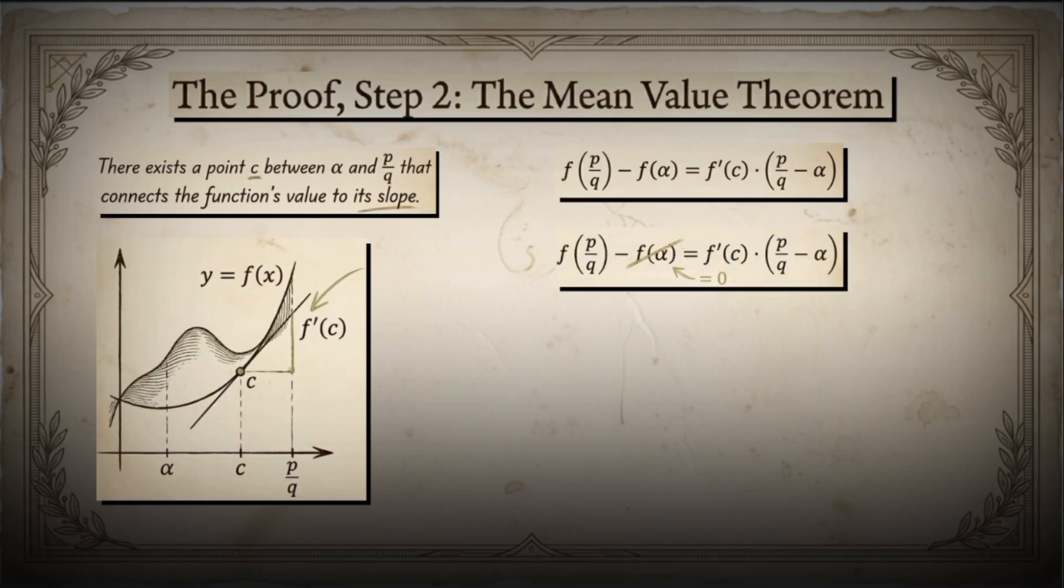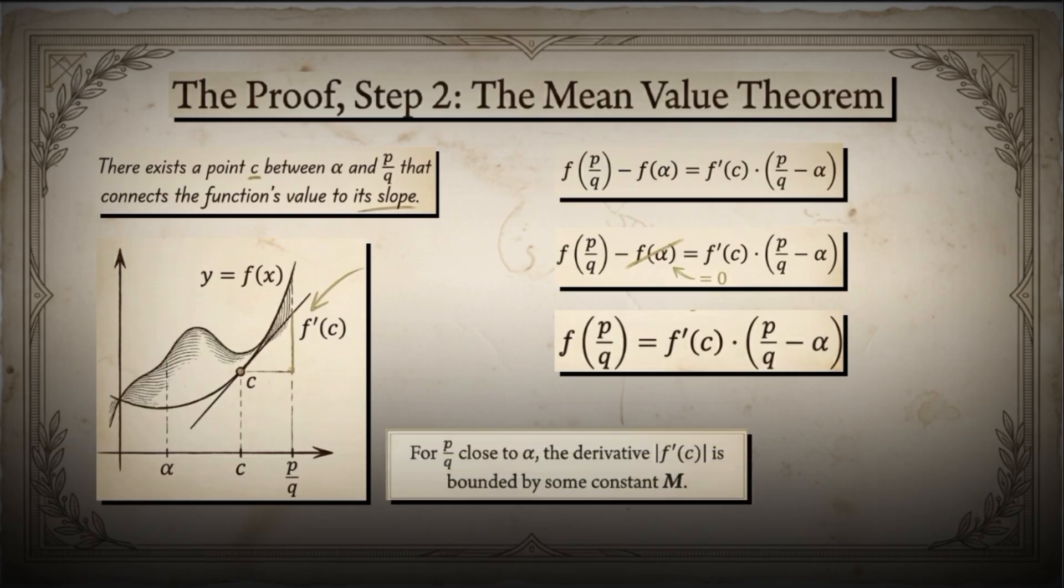Since f of alpha equals 0, we can simplify this to f of p over q equals f prime of c times the quantity p over q minus alpha. For c near alpha, the derivative f prime of c is bounded.